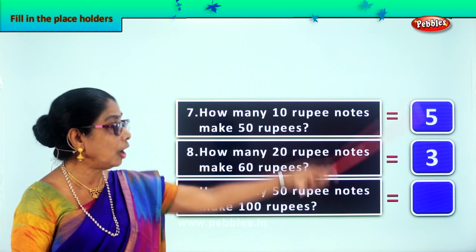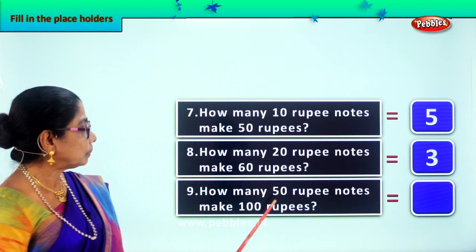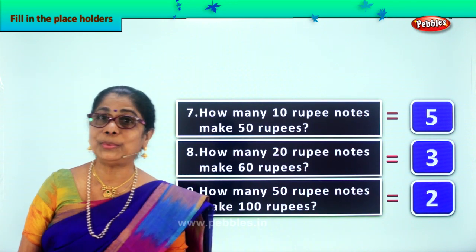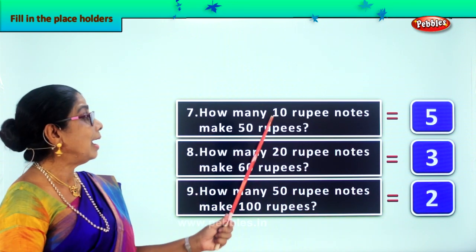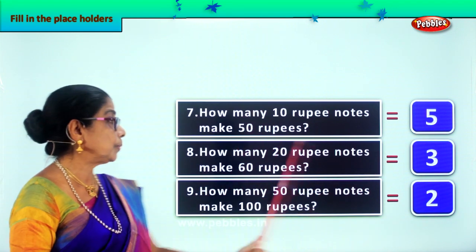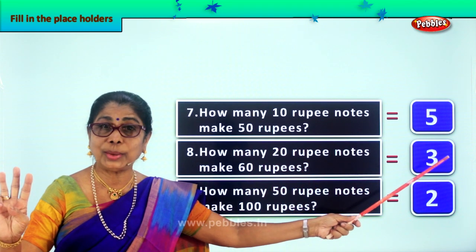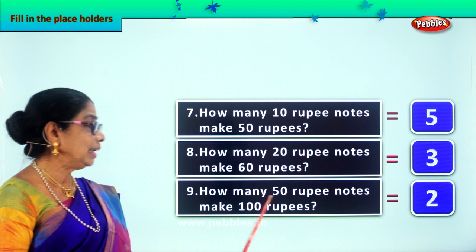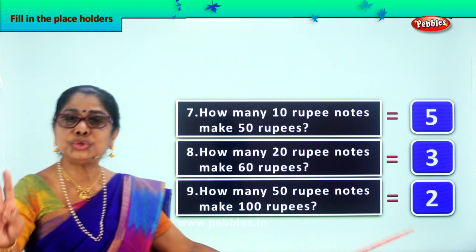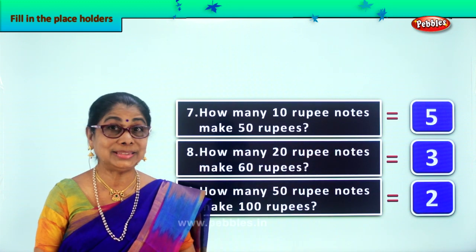We write 3 in the placeholder. How many 50-rupee notes do we need? Two 50-rupee notes to make 100. How many 10-rupee notes do we need to make 50? We need 5 ten-rupee notes. How many 20-rupee notes to make 60? Three 20-rupee notes. And finally, how many 50-rupee notes do we need to make 100 rupees? Two 50-rupee notes.